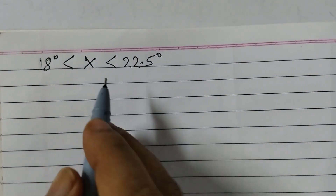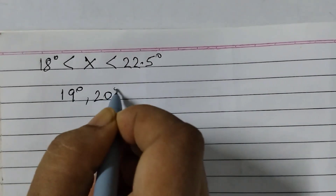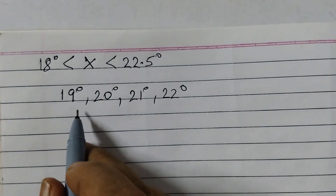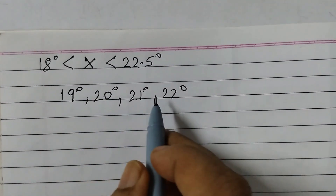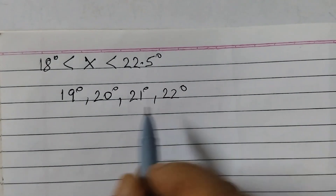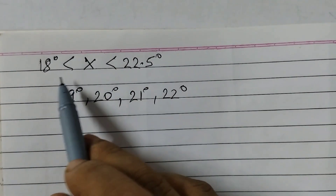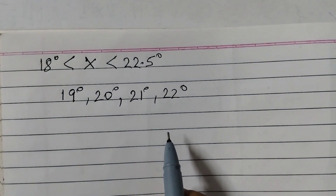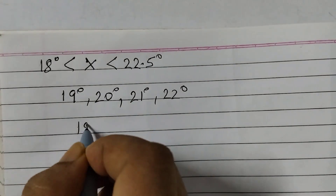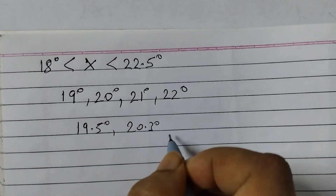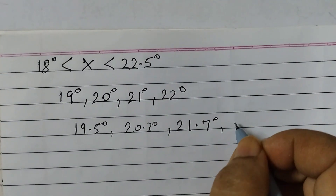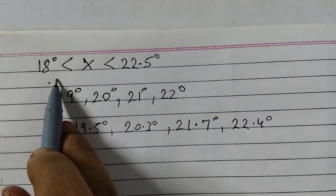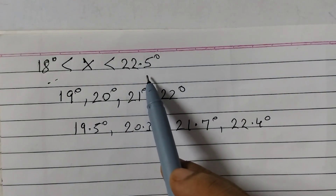What are the possible angles in between? We can have 19 degrees, 20 degrees, 21 degrees, 22 degrees. We can also have values like 19.5, 19.3, 20-point-something, 21-point-something. Any angle from 18.1 degrees up to 22.4 degrees would be a valid answer. There is no single fixed answer — possibilities like 19.5°, 20.3°, 21.7°, or 22.4° all work since they lie between 18° and 22.5°.